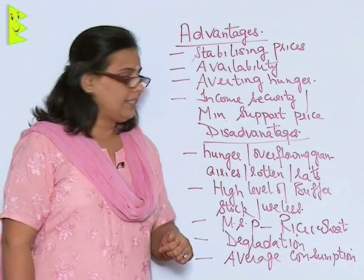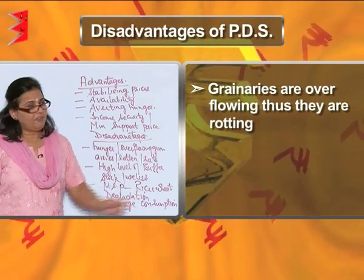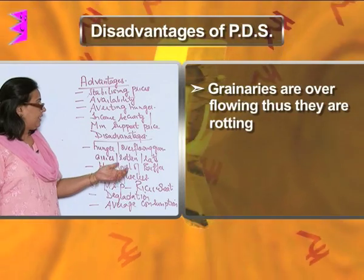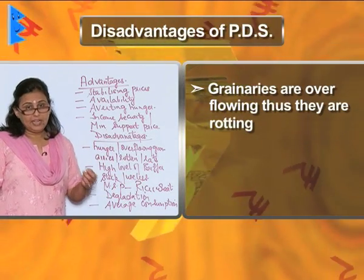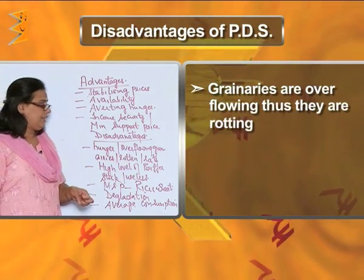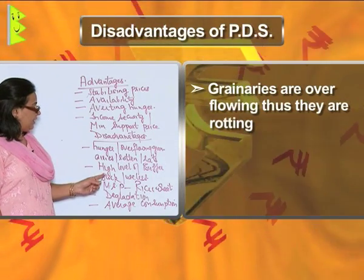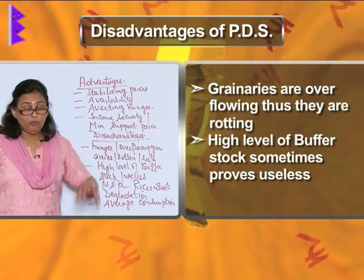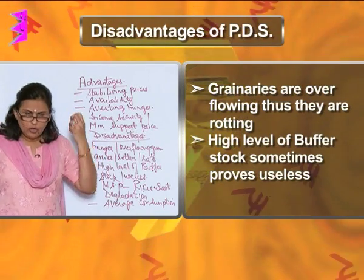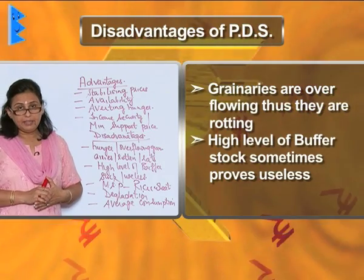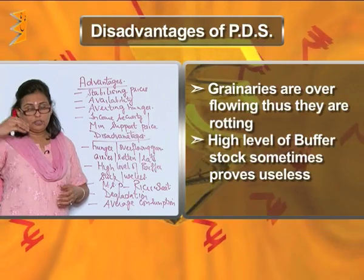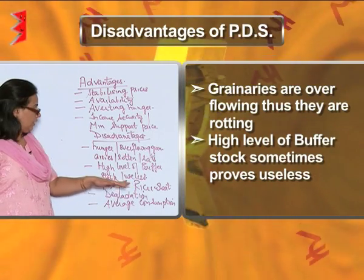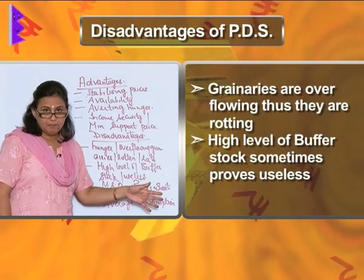The first disadvantage is that people are dying of hunger while the granaries are overflowing — there is so much in stock that it is actually rotting or being eaten by rats. The second disadvantage is that the high level of buffer stock sometimes proves useless, because it is not being given to the people who are actually dying of hunger. This reveals the ineffectiveness of the system.